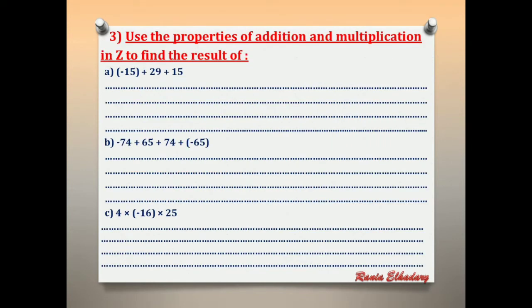Number 3: use the properties of addition to find the result. Letter A: negative 15 + 29 + 15. First step — commutative: rearrange to negative 15 + 15 + 29. Second step — associative: put brackets around (negative 15 + 15).